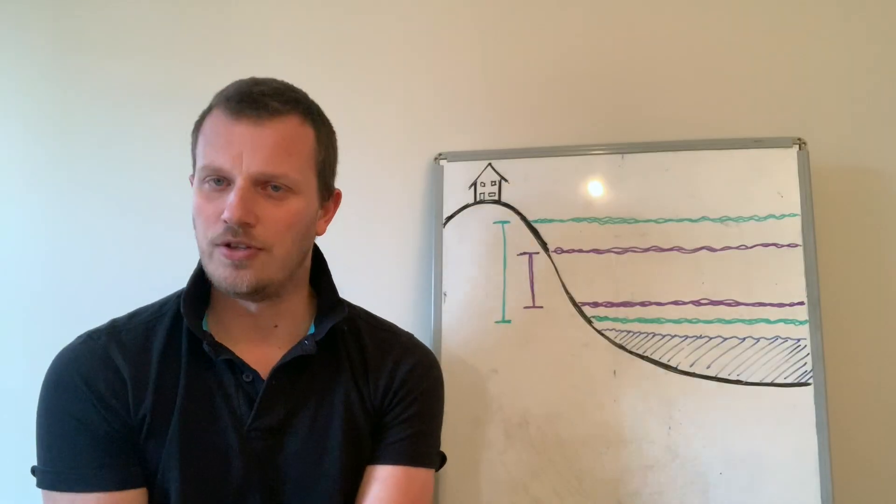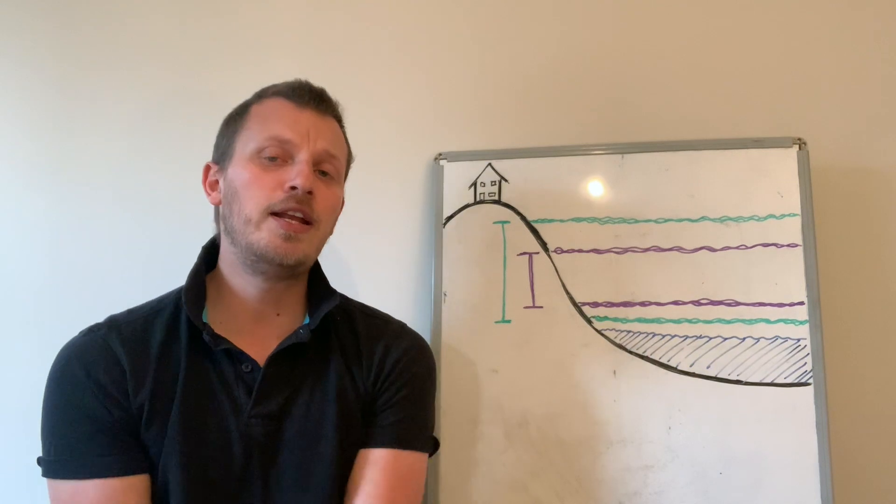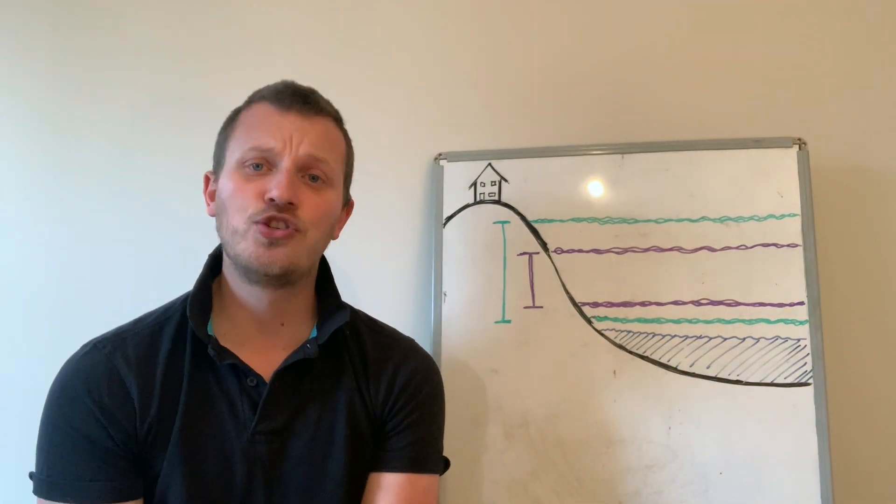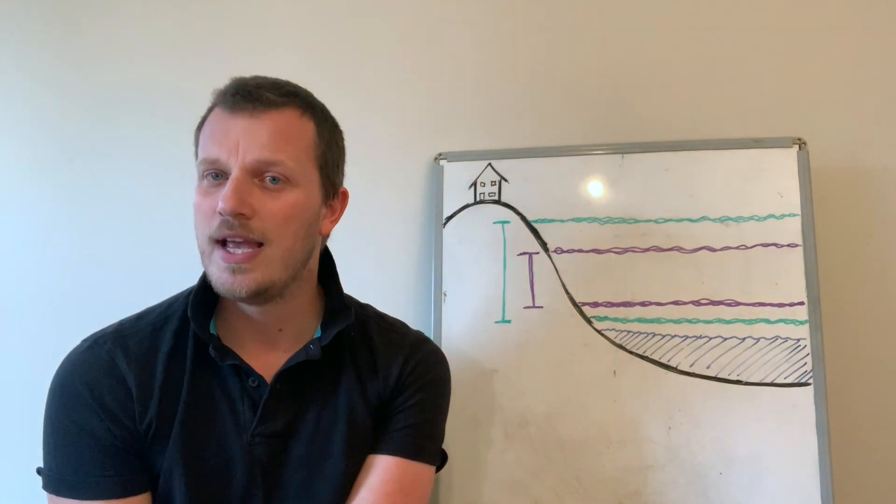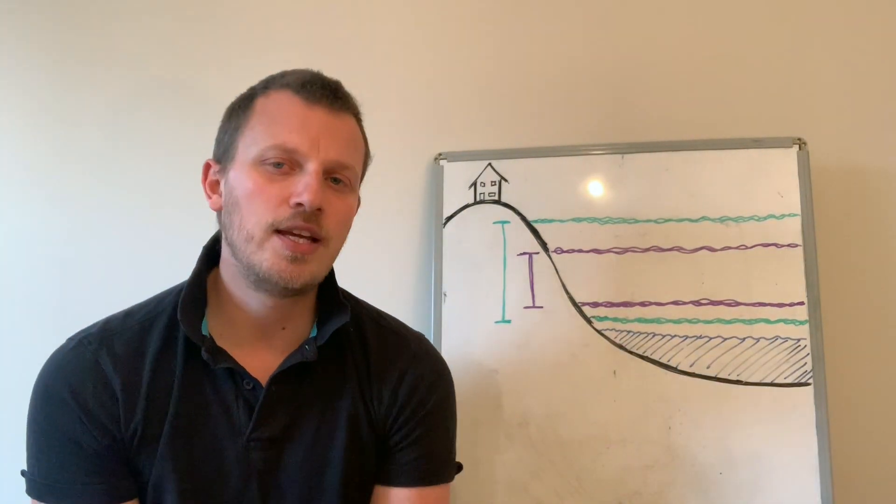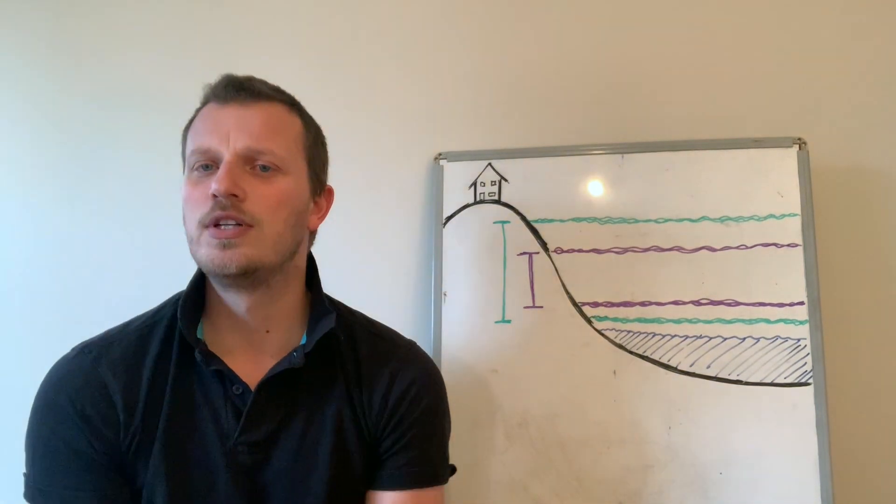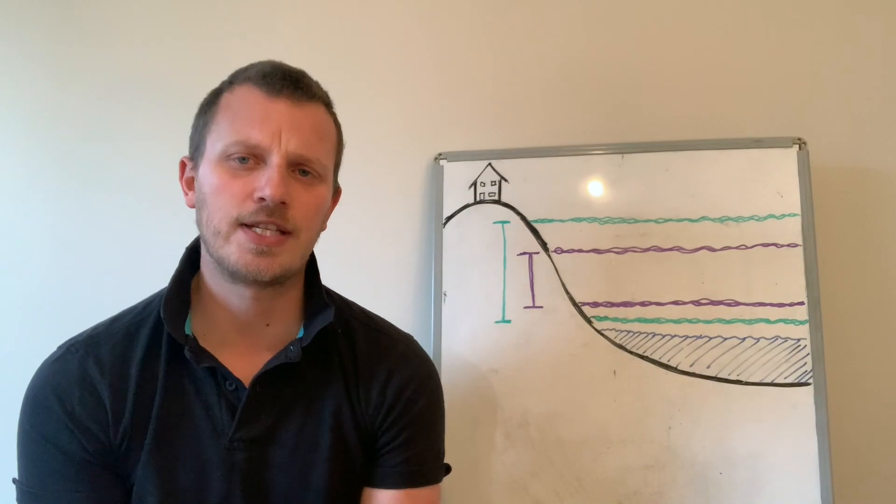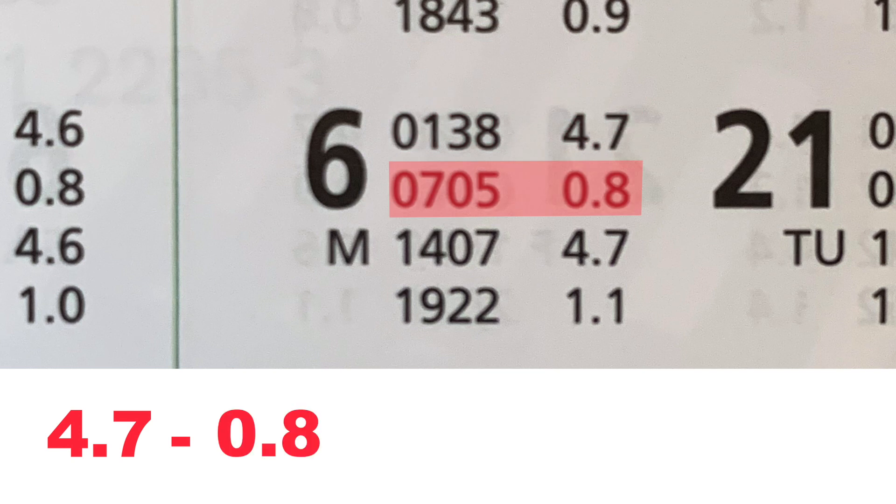Now what I'd like you to do is see if you can draw out for me a little picture like I've done here and draw on the high waters and the low waters. Draw on the heights in metres and see if you can work out in metres what the difference is. So take the high water minus the low water and that will give you the difference and that will be your tidal range.